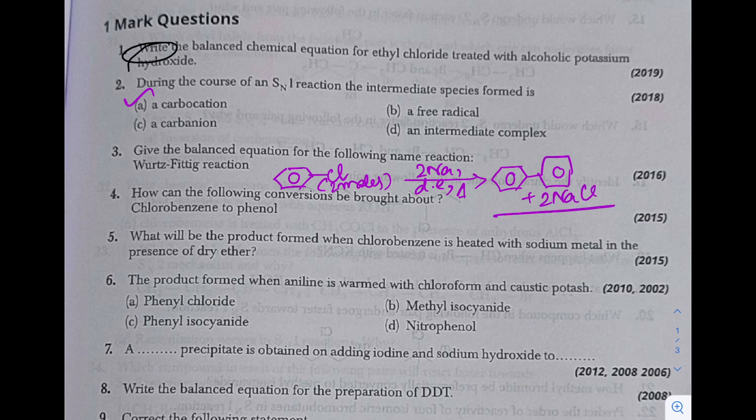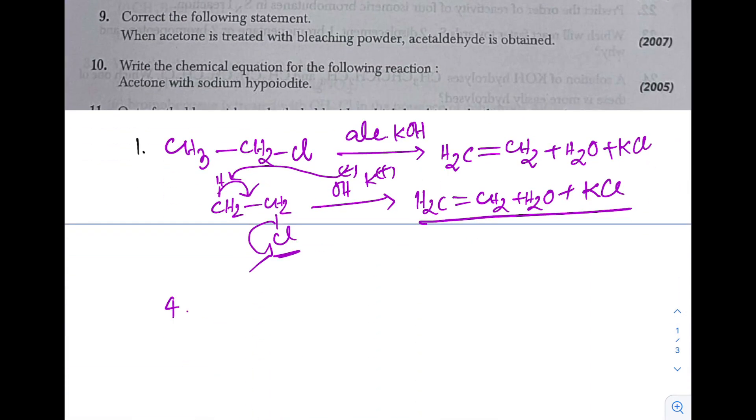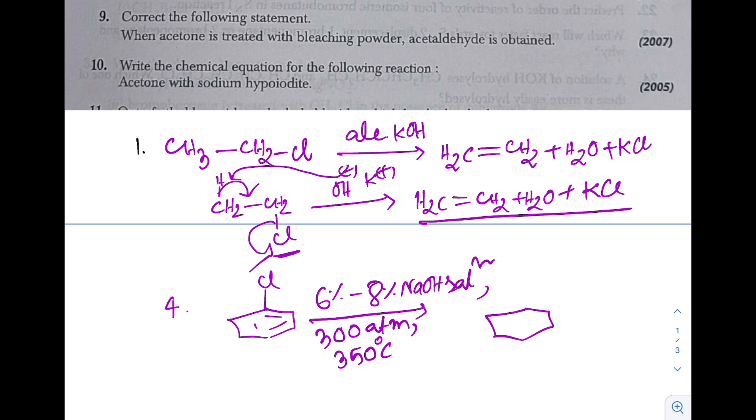Question 4: How can the following conversion be brought about - chlorobenzene to phenol? By Dow process. Chlorobenzene to phenol: 6% to 8% NaOH solution, and it has to be done in drastic conditions as Cl due to double bond character is a bad leaving group. So high temperature and high pressure is needed - around 300 atm pressure and 350 degree Celsius temperature. It will produce phenol.